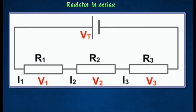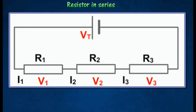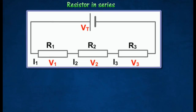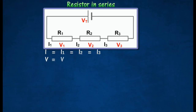In the circuit shown in the diagram, three resistors R1, R2, and R3 are said to be connected in series. The current I is the same at all points throughout the circuit. The total potential difference V across the resistors is equal to the sum of the potential differences across each resistor.